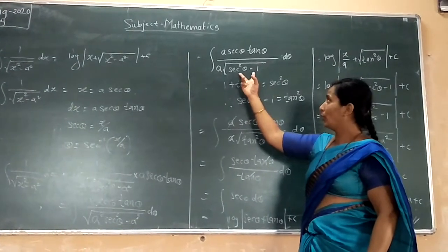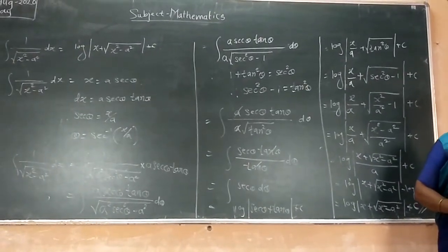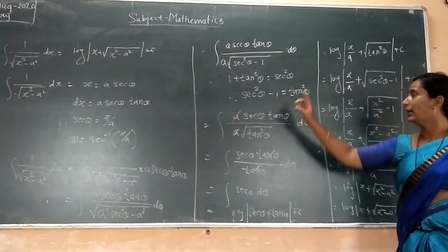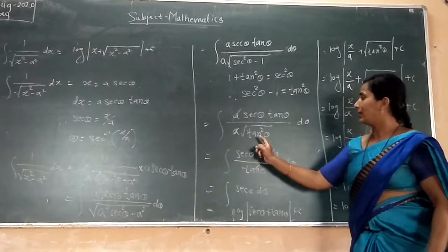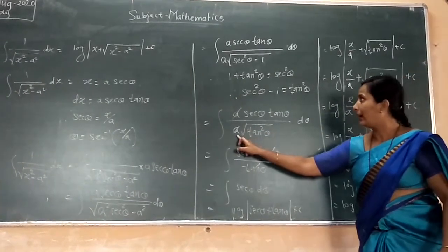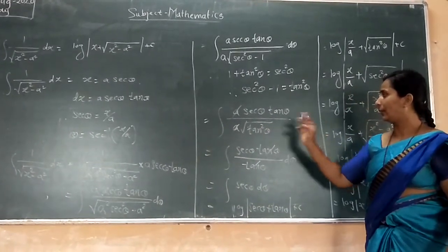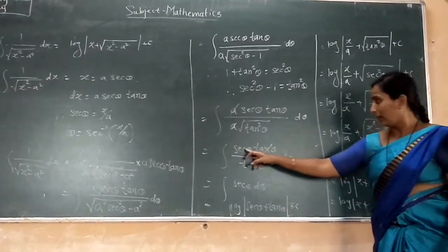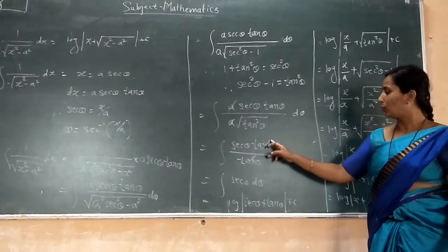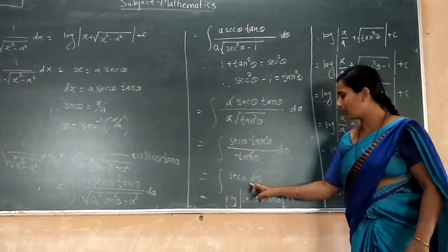For this term we use the trigonometric identity: 1 plus tan squared θ is equal to sec squared θ. Then sec squared θ minus 1 is equal to tan squared θ. Substituting this, our integral becomes a·sec θ·tan θ over a times the square root of tan squared θ, dθ. The similar terms cancel — a cancels with a outside the root, and tan θ in the numerator cancels with tan θ in the denominator. Therefore the integral term becomes simply the integration of sec θ dθ.